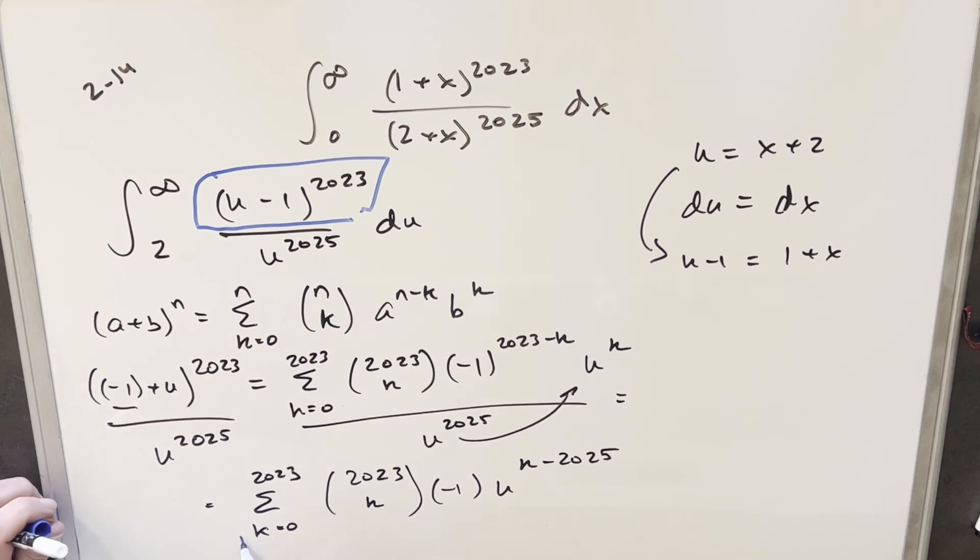But now at this point, let's just notice that everything over here on the left, including the minus one, which I forgot the exponent. This exponent is going to be 2023 minus k. So everything over here to the left is a constant value. So we can bring everything outside of the integral and just integrate here from two to infinity.